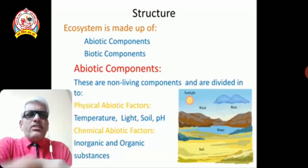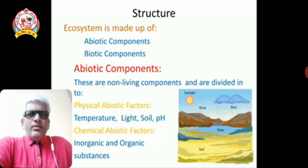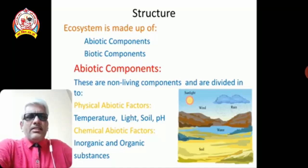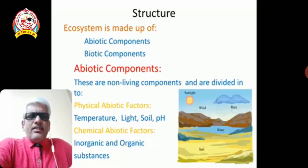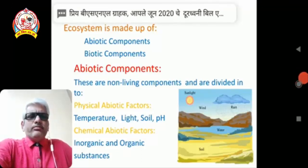The ecosystem is made up of abiotic and biotic components. The abiotic components are the non-living materials or substances present in nature. They are divided into two main categories: physical abiotic factors — which include temperature, light, soil, pH, and salinity — and chemical abiotic factors, which include the inorganic and organic substances present in nature.